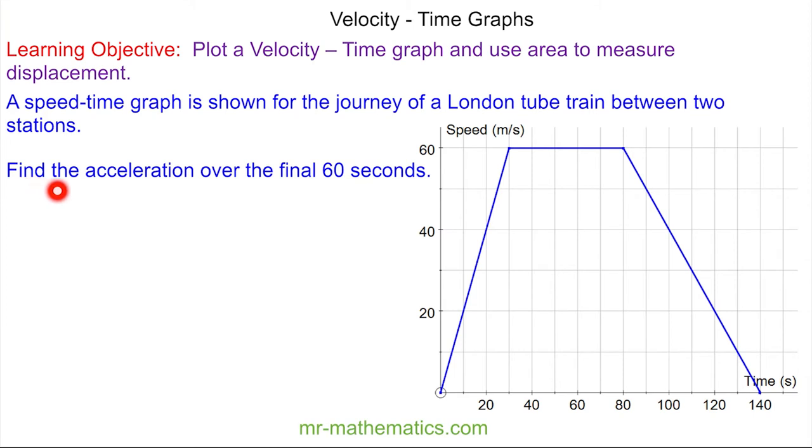So now we've been asked to find the acceleration over the final 60 seconds, which is this part here. Do you want to try and do this yourself by pausing the video? You can resume it when you're ready. So again, acceleration is speed divided by time. We can see the speed is from 60 to 0, which is negative 60.